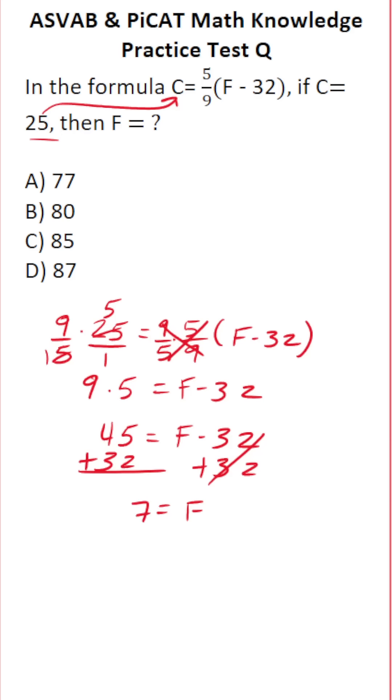5 plus 2 is 7. 4 plus 3 is 7. So Fahrenheit in this case is 77 degrees. So the answer to this one is A.